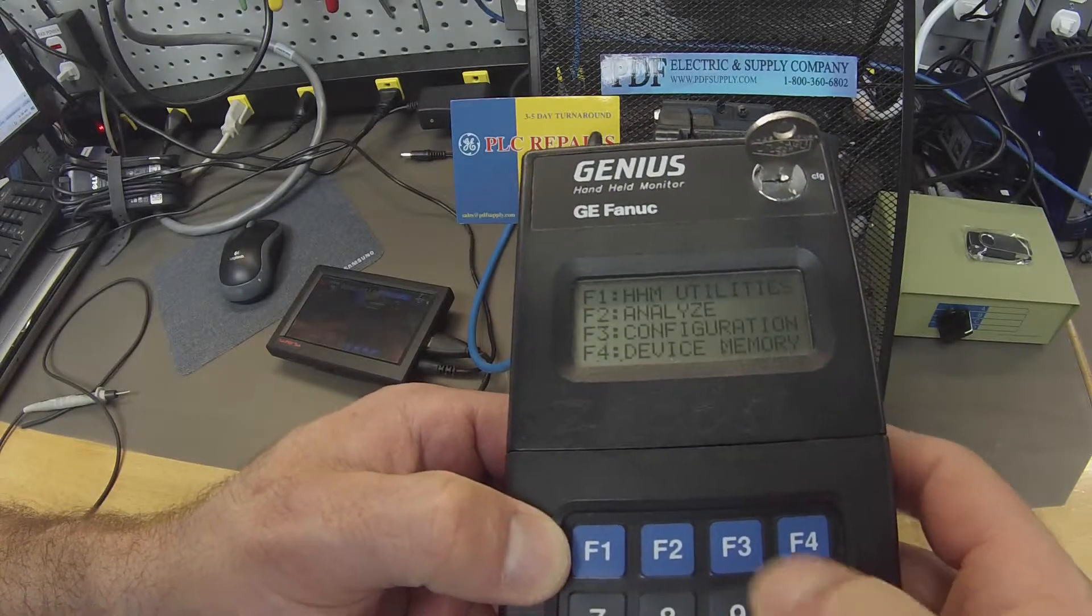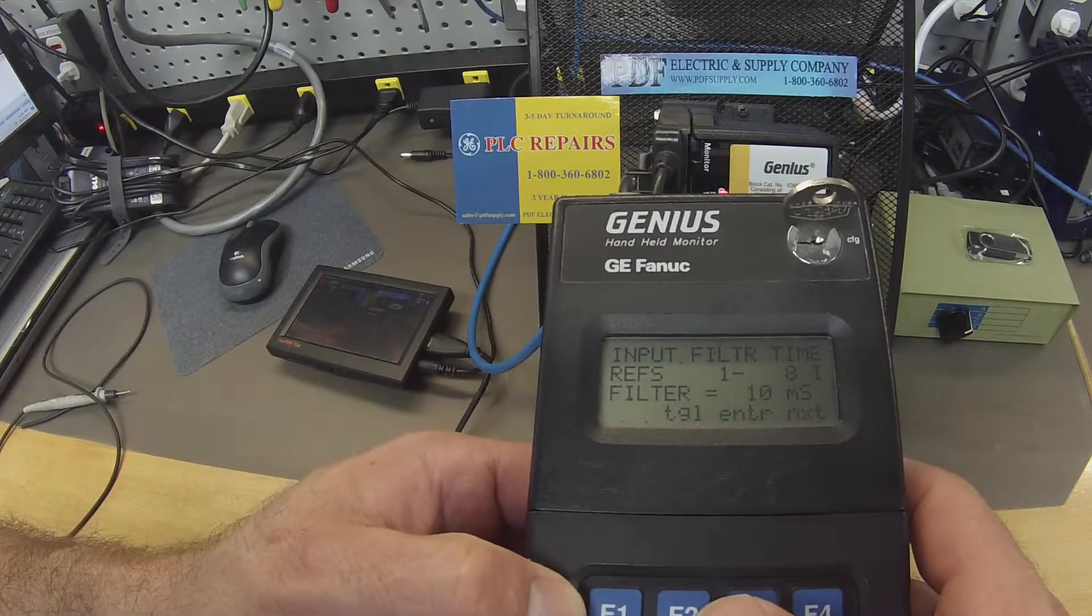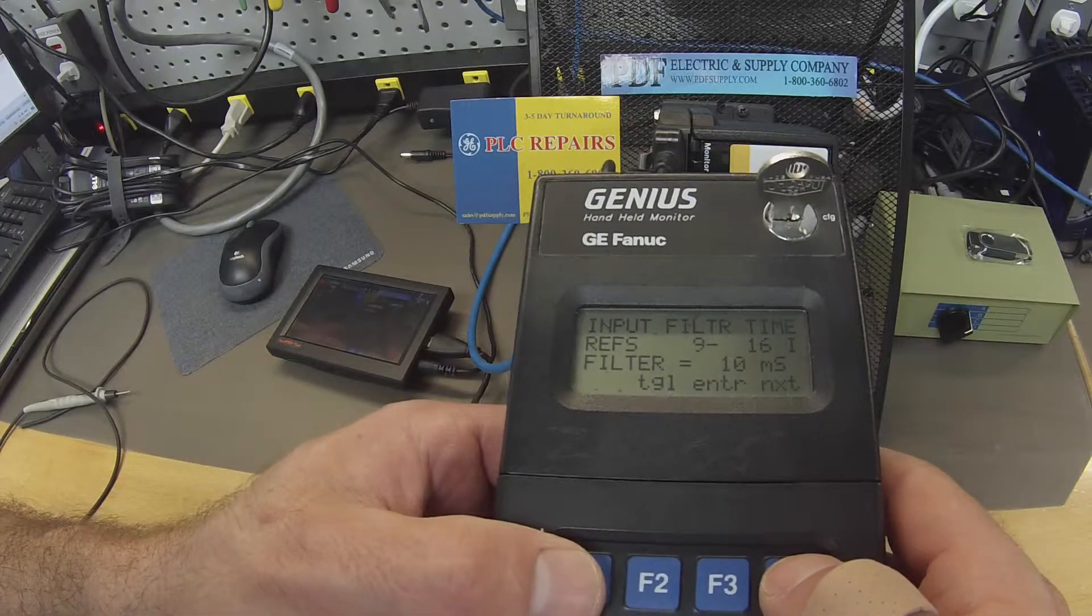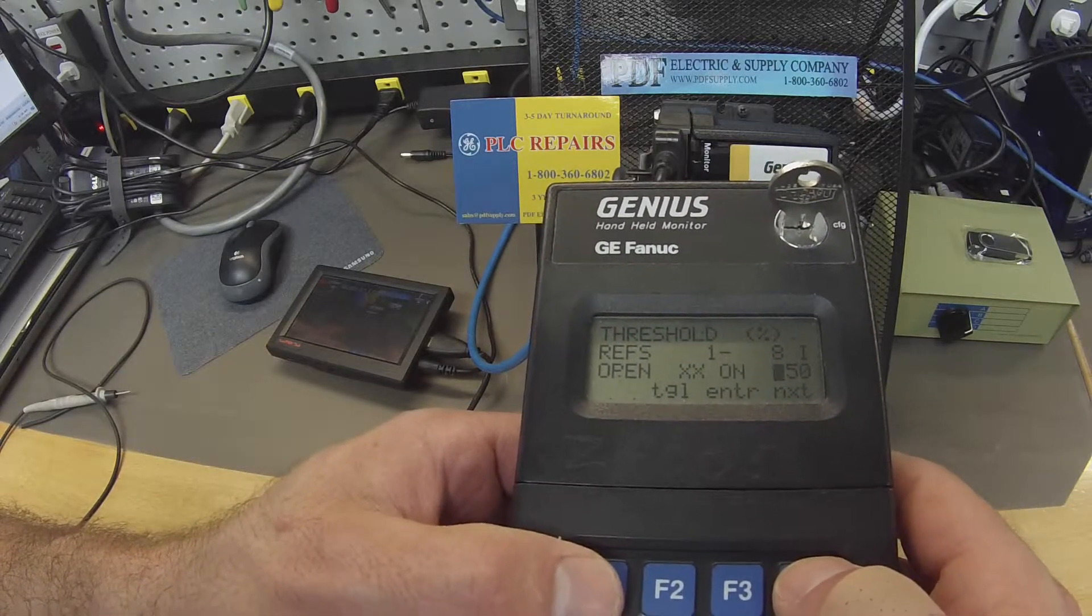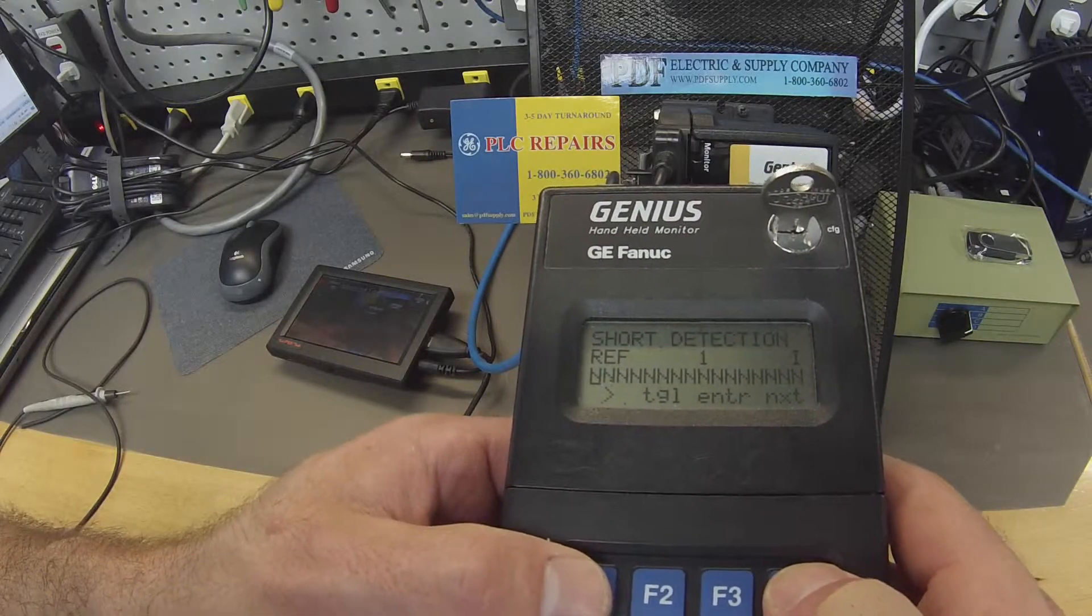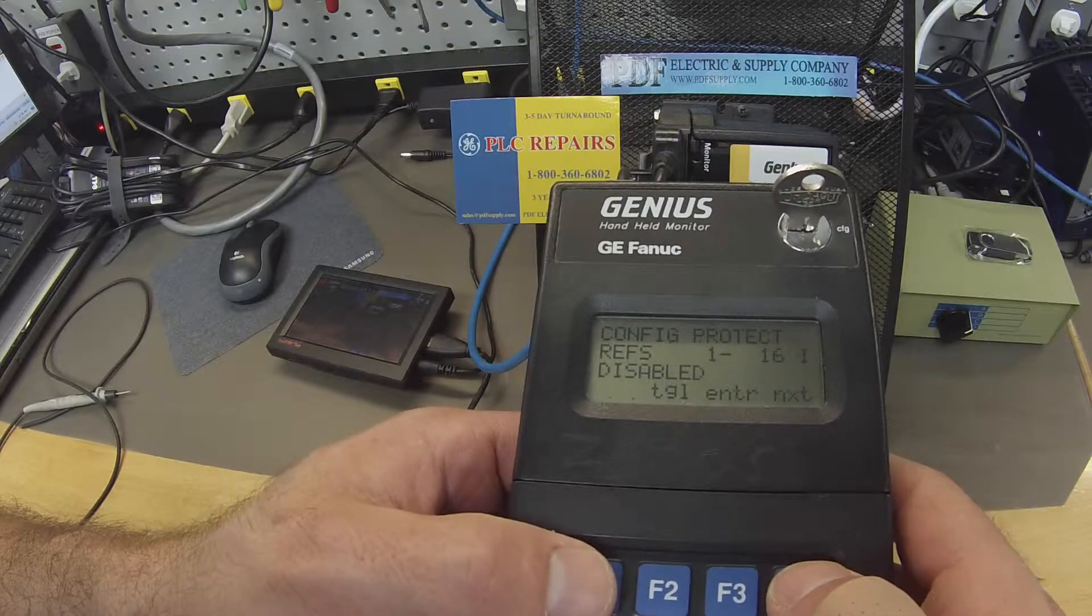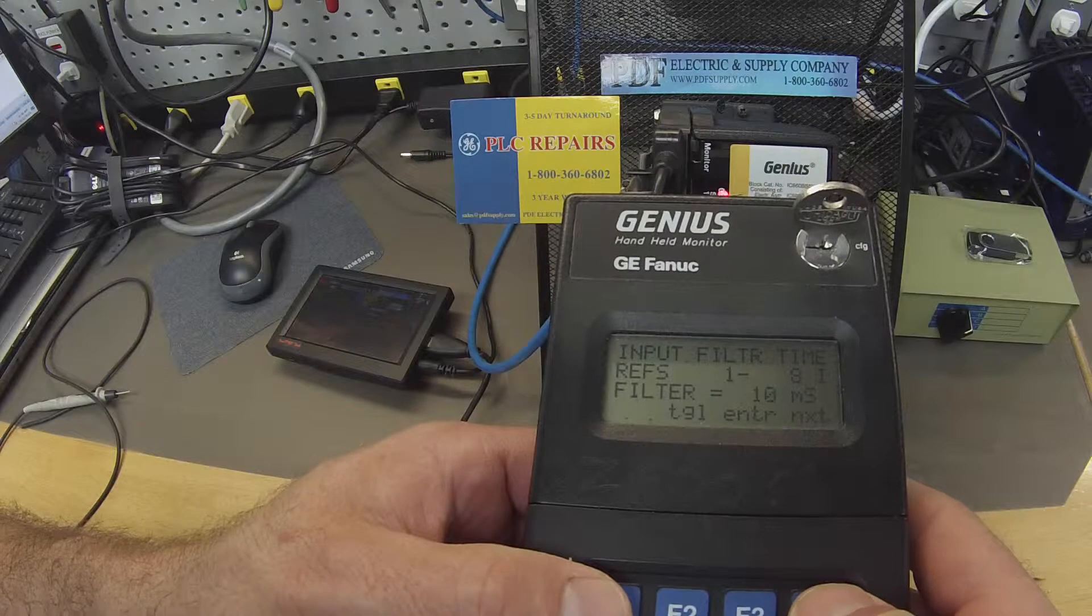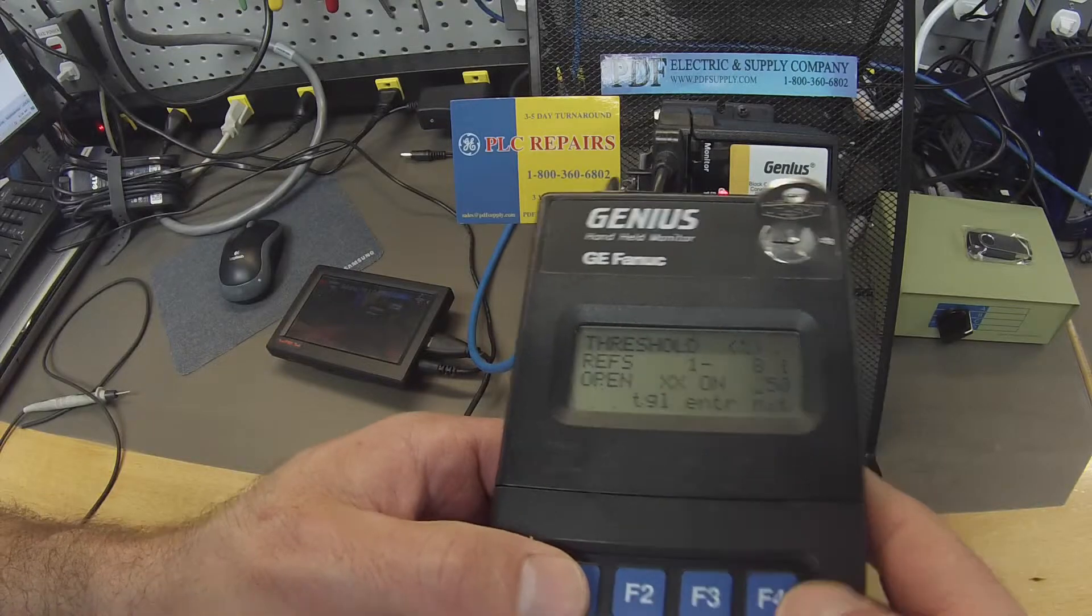I'm going to go back to home, configuration, configure block. Now the rest of this is the factory settings, 10 milliseconds. Next, 9 through 16, 10 milliseconds also. Threshold at 50, 9 through 16. Report faults, yes. Short detection, no. Open wire detection, no. Configuration protect, I have it disabled so that I'm able to make changes but you guys can enable it once it's set the way that you want it. Input filter time, 10 milliseconds and that's for all channels.